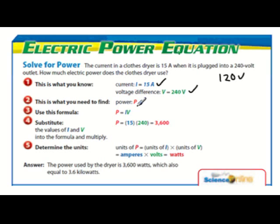What we need to do is find P. We use our equation P equals I times V. Plug our numbers in and we find out the value is 3600 watts or 3.6 kilowatts.